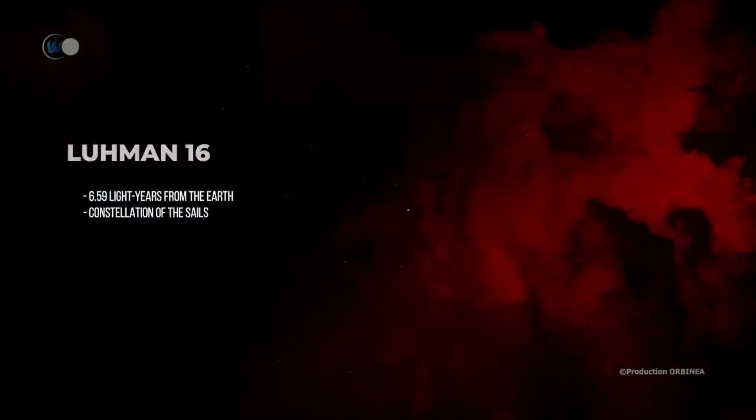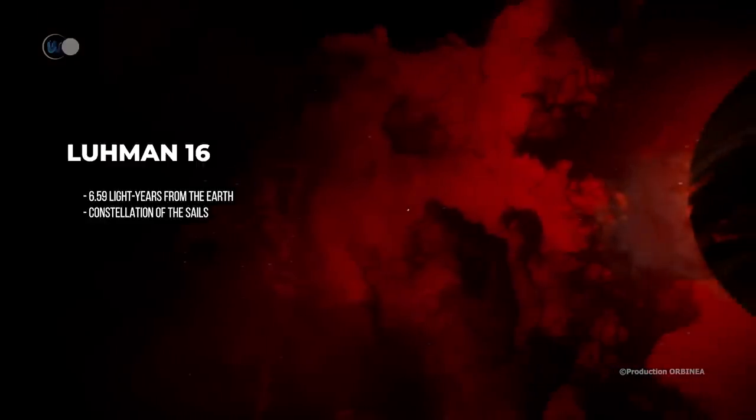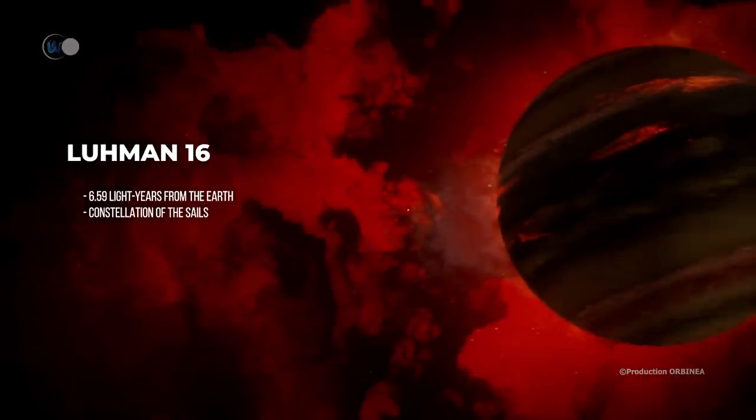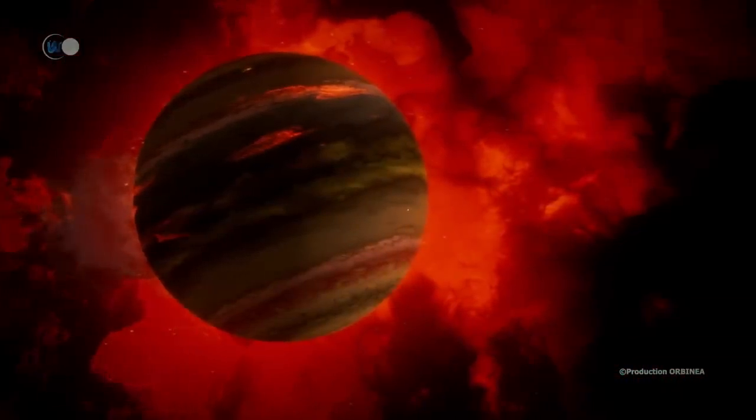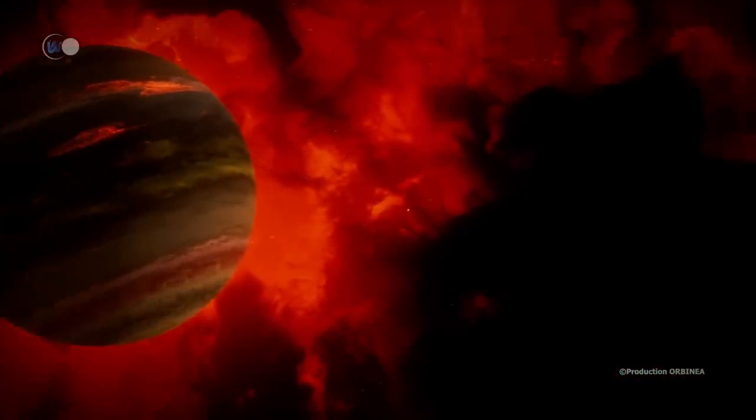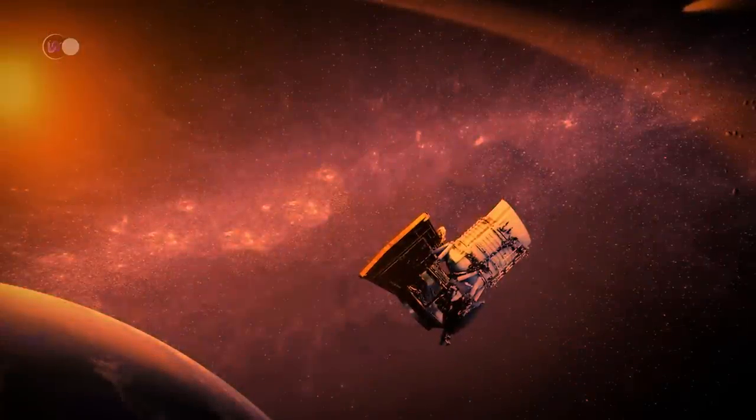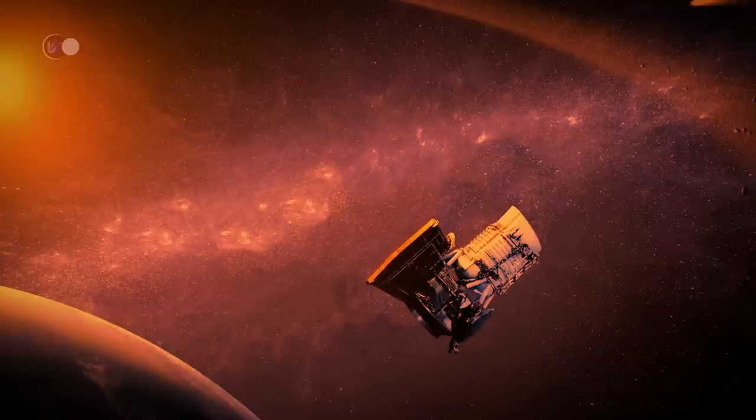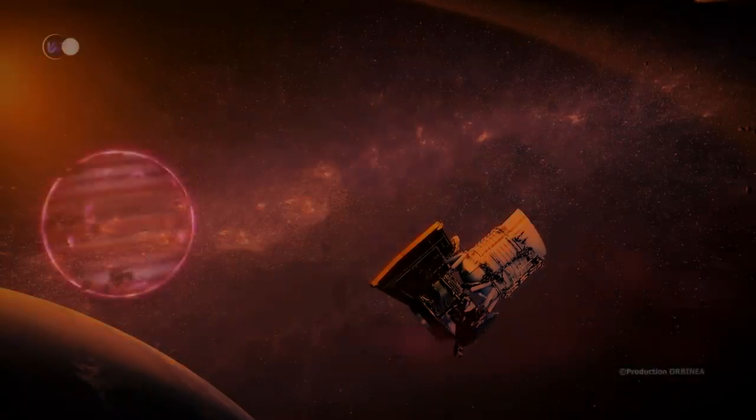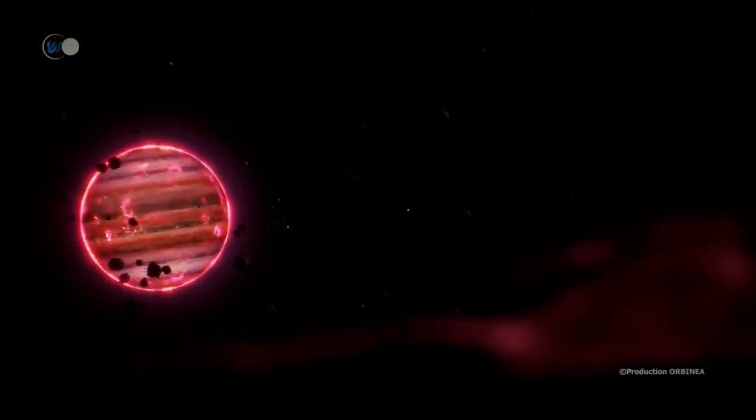Let's continue our interstellar journey, and reach the binary system Luhman 16, which is only 6.5 light years away from our Sun. Composed of two brown dwarfs, it is located in the southern constellation of the Sails. To date, it is the closest known pair of brown dwarfs to our solar system. Their recent discovery, which dates back only to 2013, was the result of a 13-month mission by NASA's WISE spacecraft. It acquired about 1.8 million images of asteroids, stars, and galaxies.